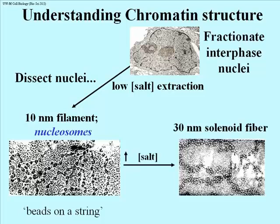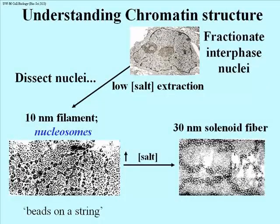The solenoid, by the way, refers in electricity or electronics to a coil of wire, and so the analogy here is the 10 nanometer filament coiling up on itself to form a solenoid-like structure — three times in diameter what the nucleosome beads are. All you need to do is increase the salt concentration, so clearly there are ionic charge interactions responsible for the transition between the 10 and the 30 nanometer structures. The 30 nanometer solenoid becomes looped structures, and looped structures can condense into chromosomes by the addition of more non-histone proteins.